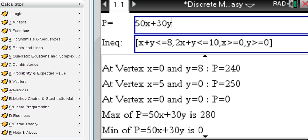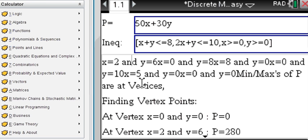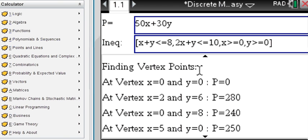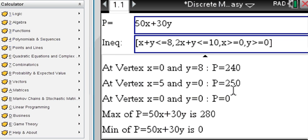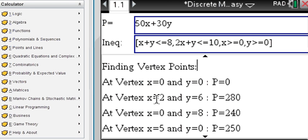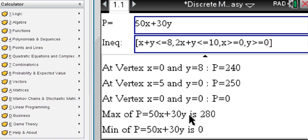You enter your function in terms of x and y, right here. And you enter your inequalities, right here, also in terms of x and y. And what you see are the vertex points that are being evaluated at the corners, which are 0, 0, 2, 6, etc. And you see your profit is at a maximum at this corner when x is 2 and y is 6. Profit is 280. And the minimum is equal to 0 here.